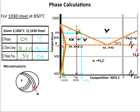Our next example is still for the same 1030 steel, but it is cooled down to 850 degrees Celsius. Here are all the calculations from the previous video. As gamma cools into the alpha plus gamma region, alpha begins to form primarily at the grain boundaries because of the high diffusion rate there. The alpha kicks out carbon because of alpha's low solubility limit of carbon, therefore enriching the gamma with the carbon that the alpha kicked out.